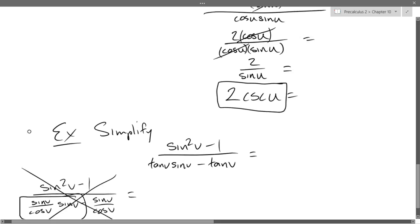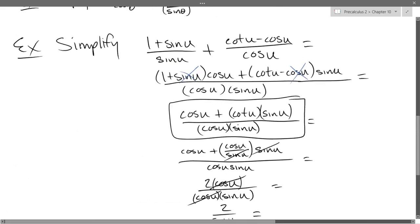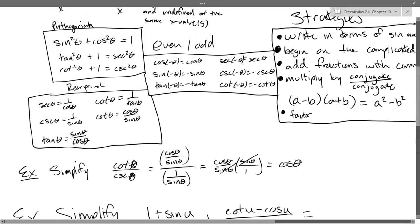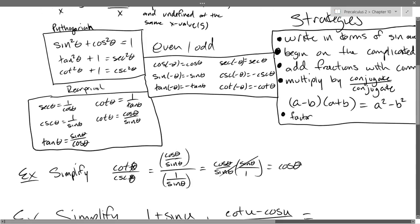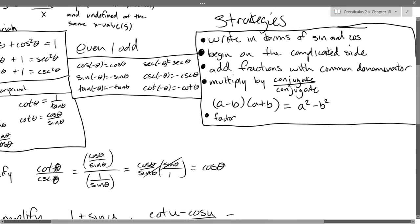So let's not write in terms of sines and cosines. What are my other options? I can multiply by conjugate over the conjugate. I could factor.